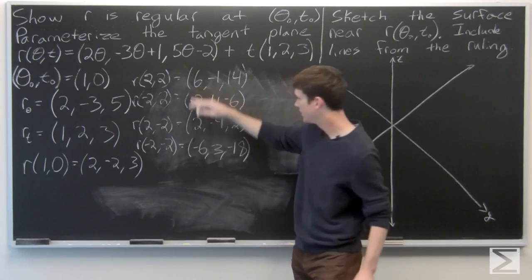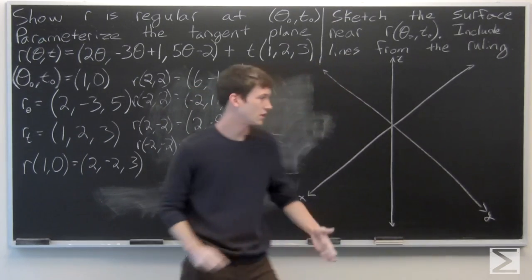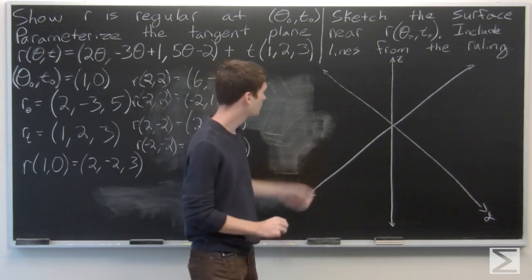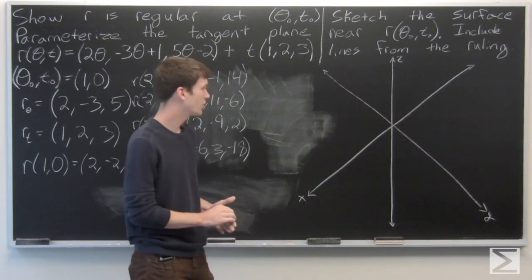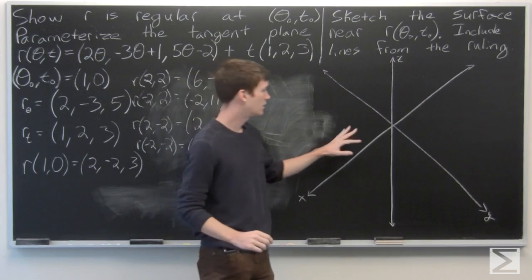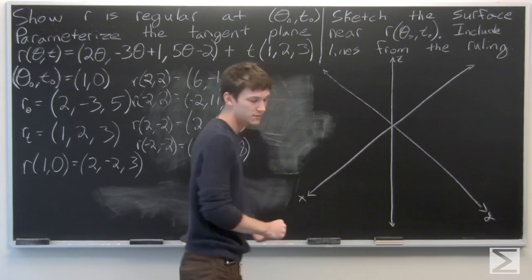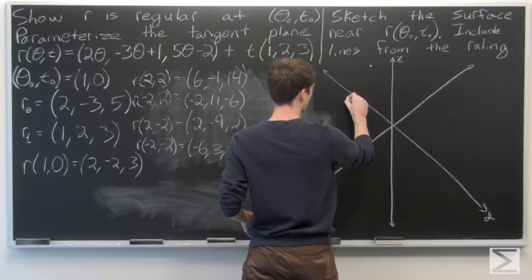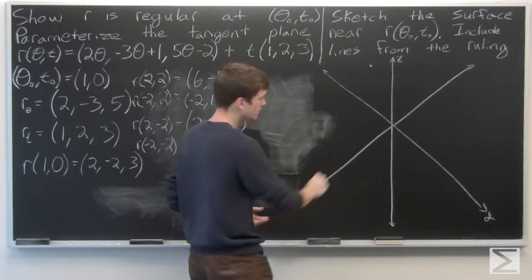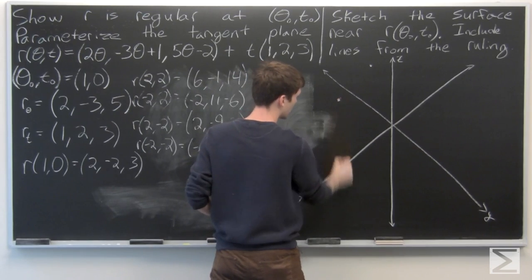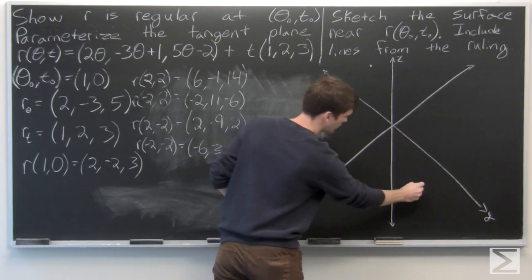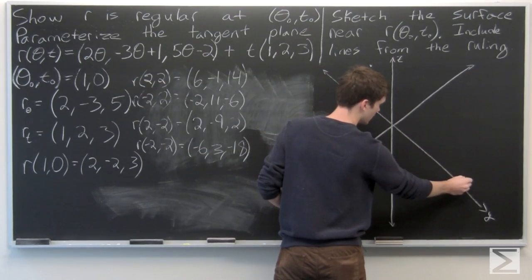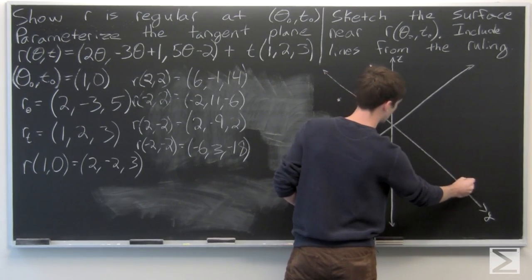So we have these four points and we want to plot them in three-dimensional space. We'll plot them, with one point up here, another there, and then the others roughly like that.